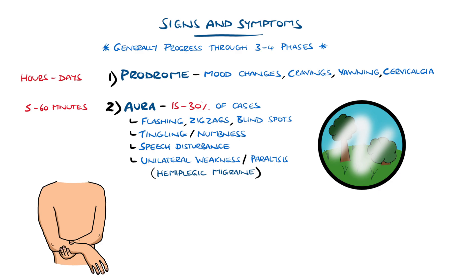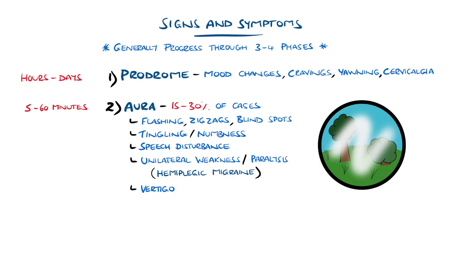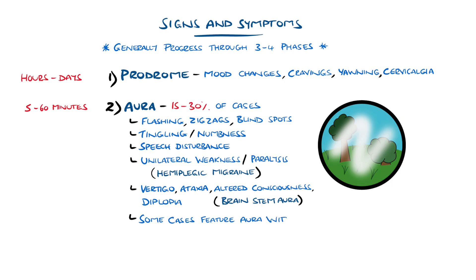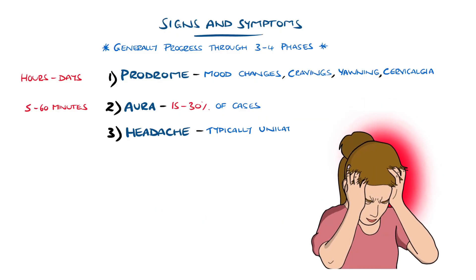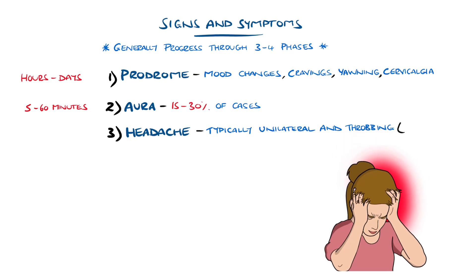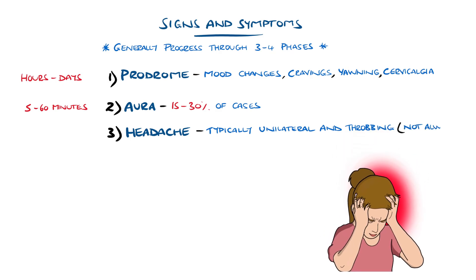Another specific type of aura is migraine with brainstem aura, previously called basilar artery migraine, in which there is vertigo, ataxia, as well as other symptoms including altered levels of consciousness. It is worth noting that some people will primarily experience an aura and only minimal or no headache. The headache itself is typically unilateral, but does not have to be, and is most commonly described as a throbbing character, although again not all are.